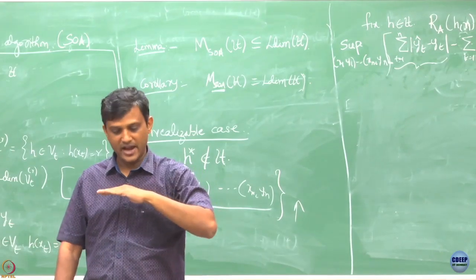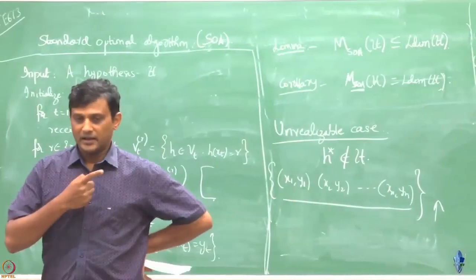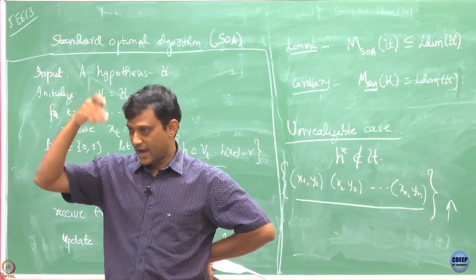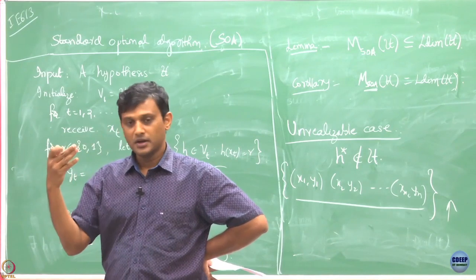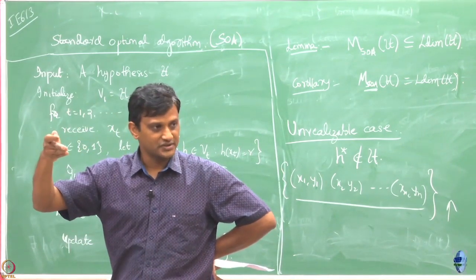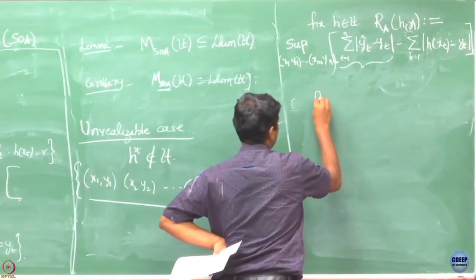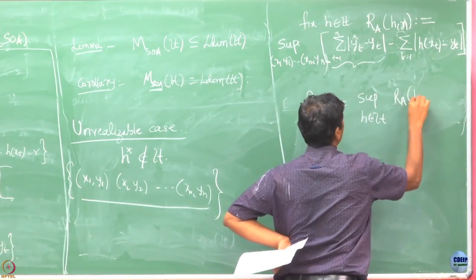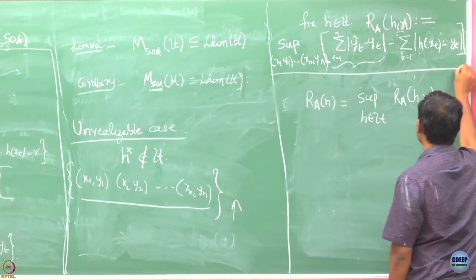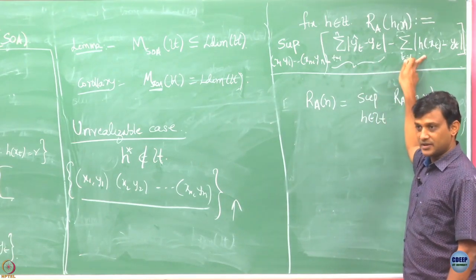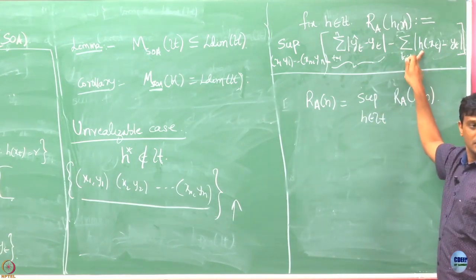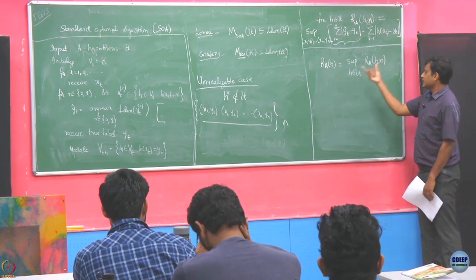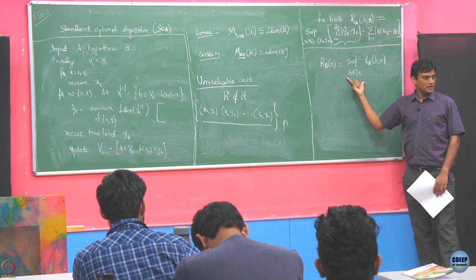This hypothesis need not be the best one — I do not know which one in my hypothesis class does the best job. I want to compare my performance against the best hypothesis. So I define my regret as the supremum of this quantity over all H. If I play a good H, this quantity is smaller because a good h makes fewer mistakes. That is why I take the supremum over all h.